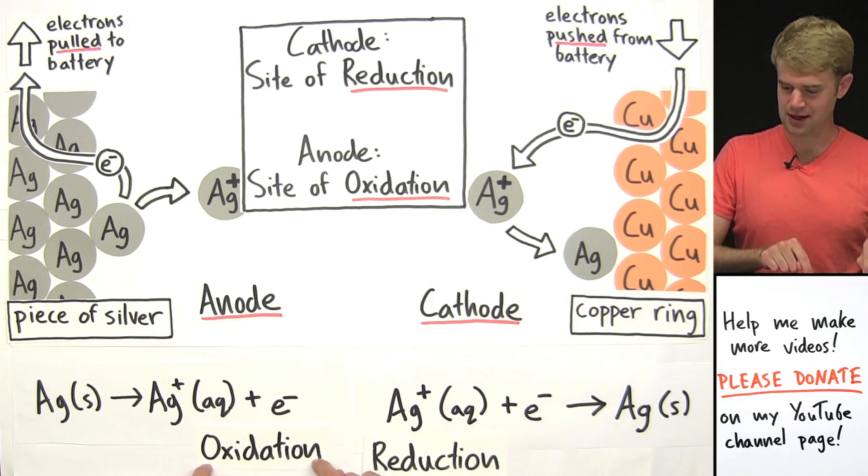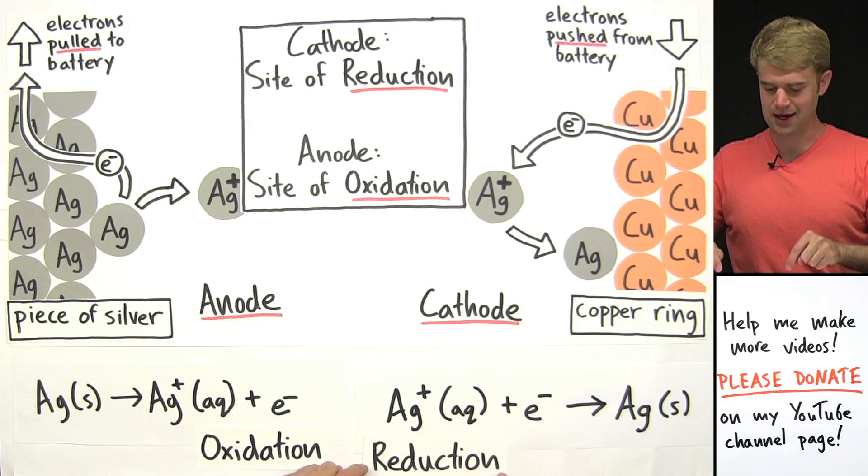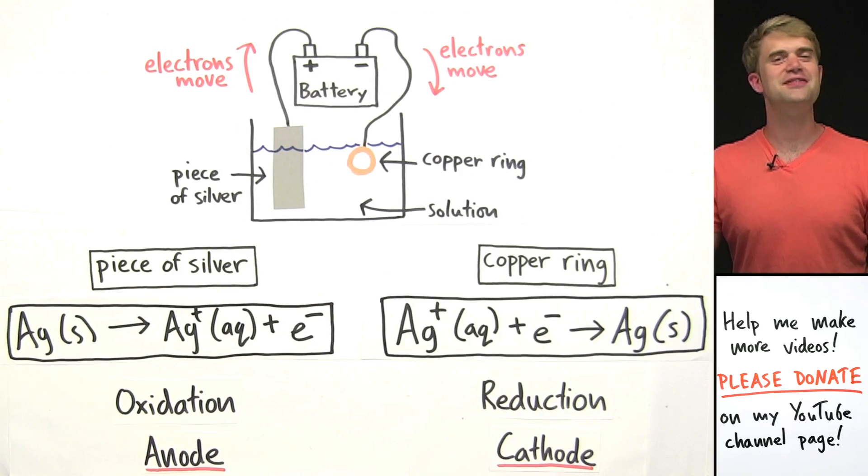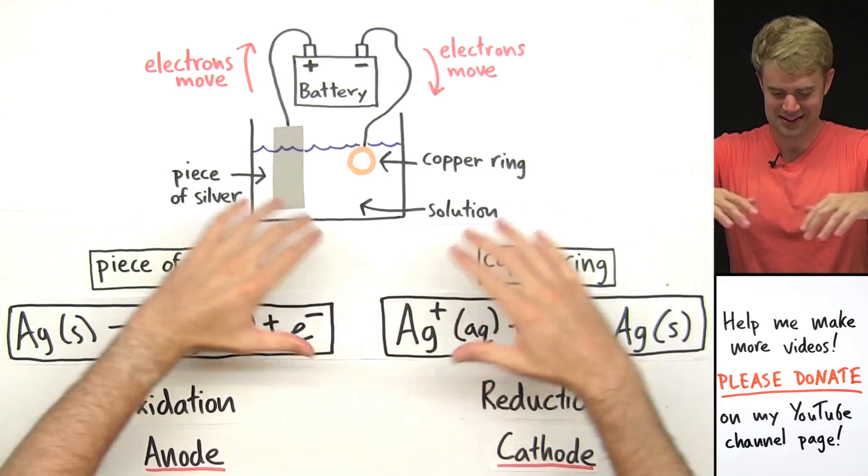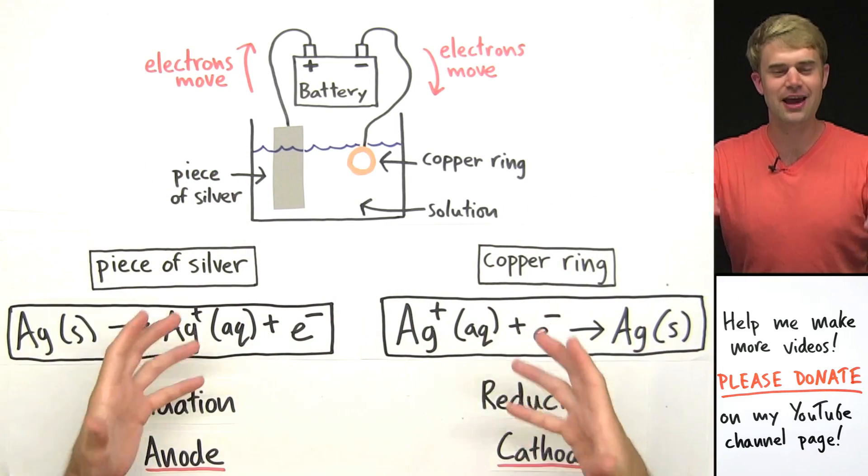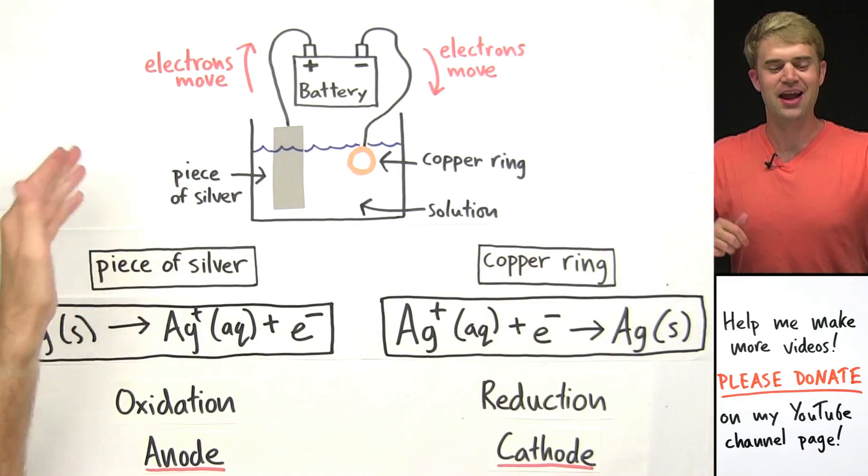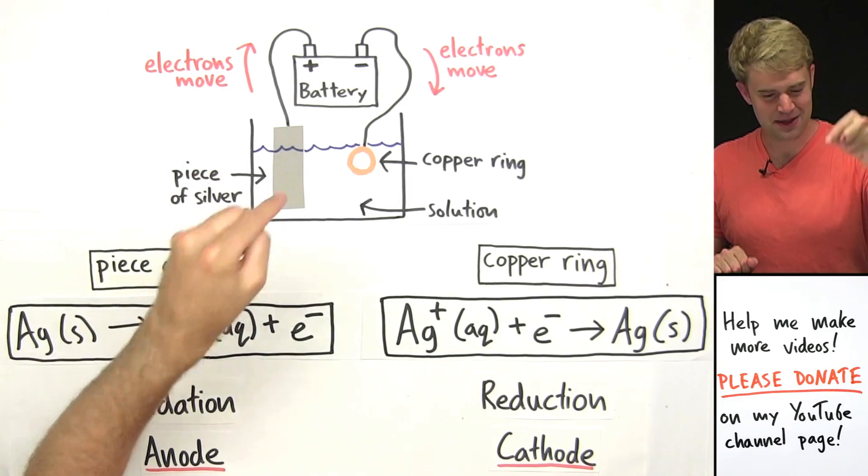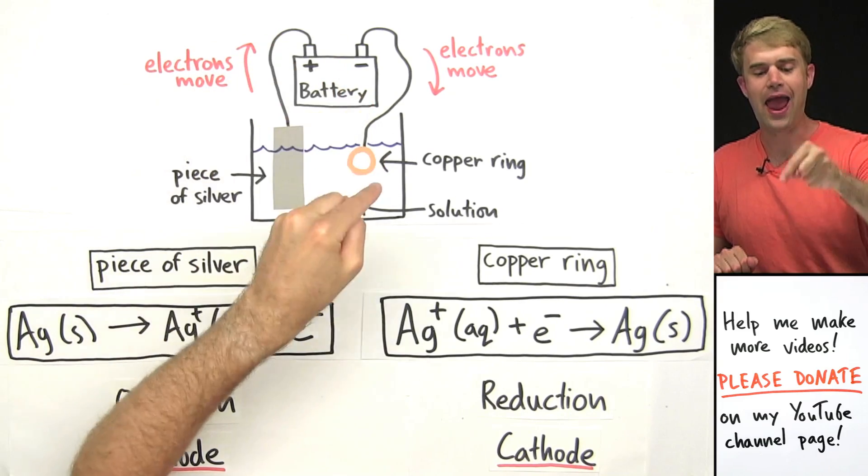Anode, site of oxidation, cathode, site of reduction. So that's everything about electroplating. Let's just tie this information all together with the big picture. Here's our electroplating cell, we got a piece of silver, a battery and a copper ring.